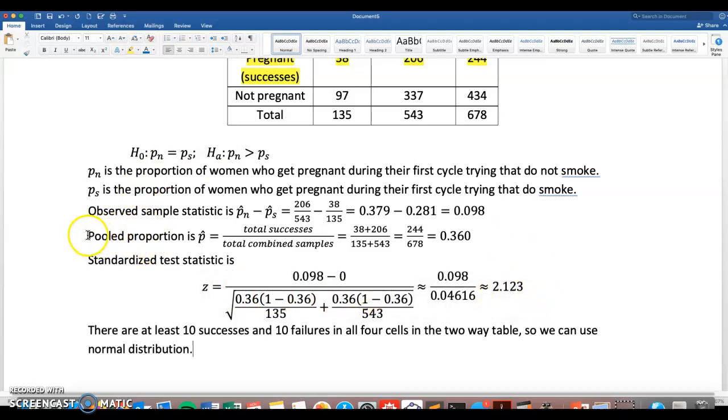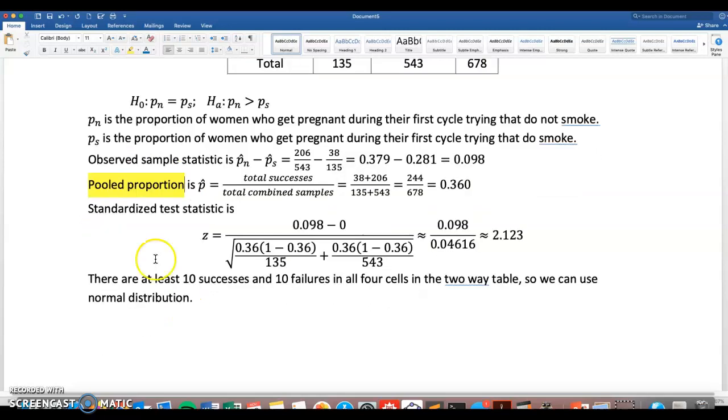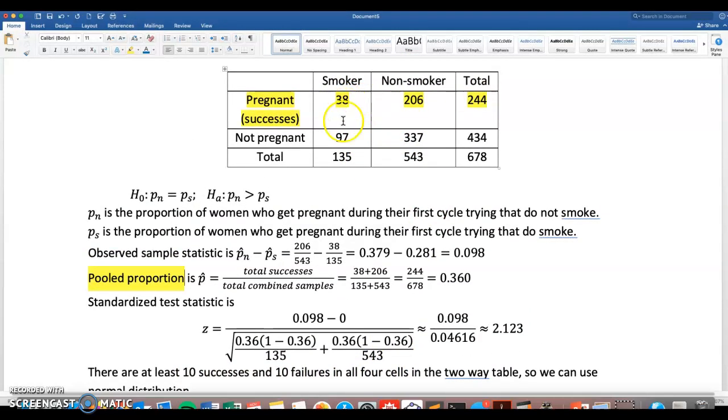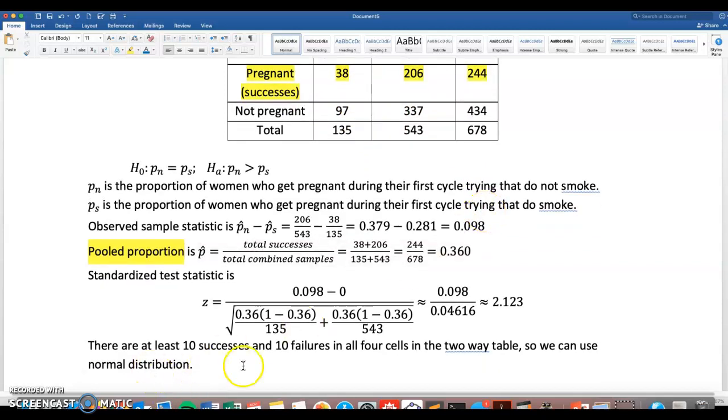The new concept is we had to use this idea of a pooled proportion to get p hat, which is a part of the standardized test statistic. So make sure there are at least 10 successes and 10 failures in all four cells, or in both groups, successes and failures, so we can use the normal distribution.